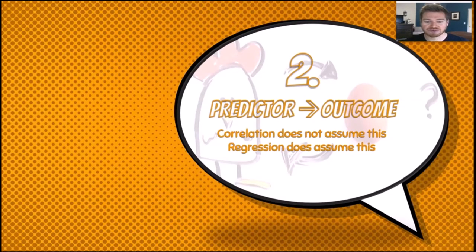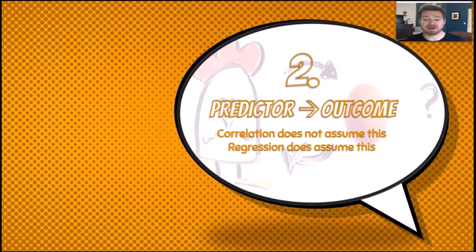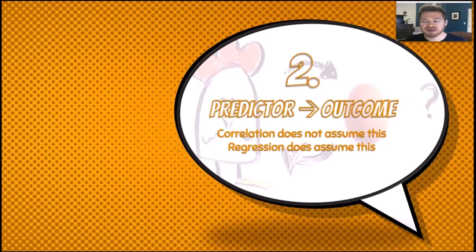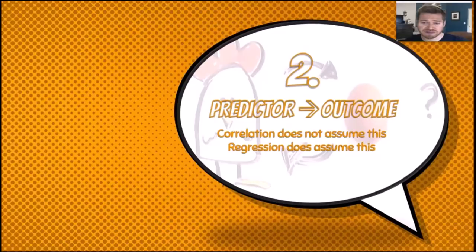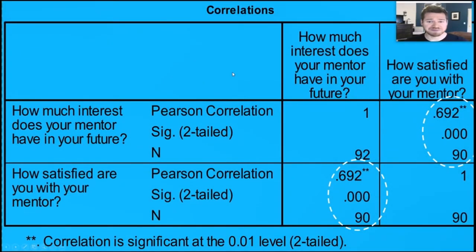Correlation does not assume a predictor and an outcome — it simply says two things are related. Regression, however, assumes an order: an input and an output, a predictor and an outcome. You must pick which is x and which is y. The answers you get in regression depend on which variable you specify as x and y, so putting the wrong variable in the wrong place gives the wrong answer.